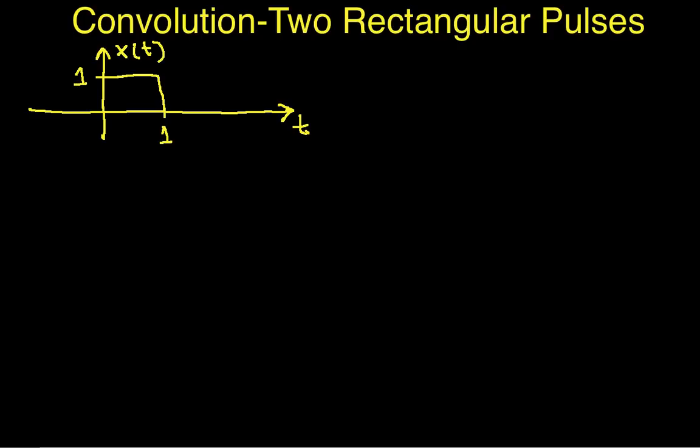So let's assume that we have a signal x of t that is a pulse of amplitude 1 and it goes from 0 to 1.